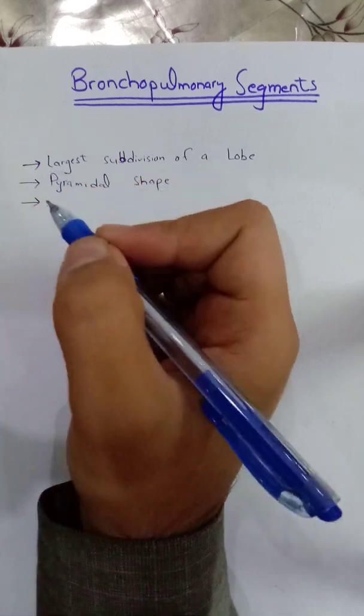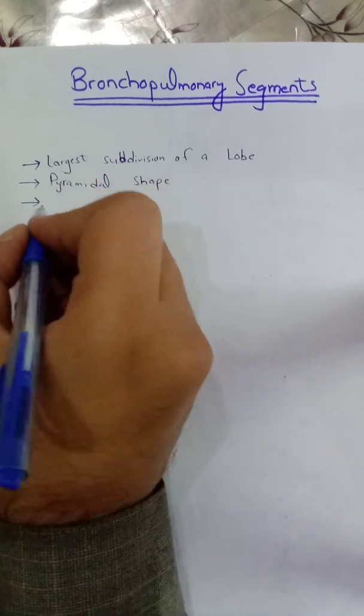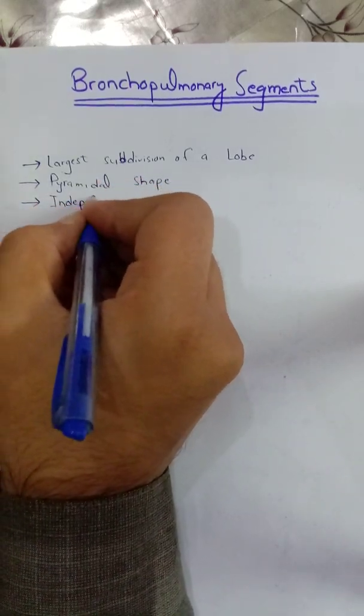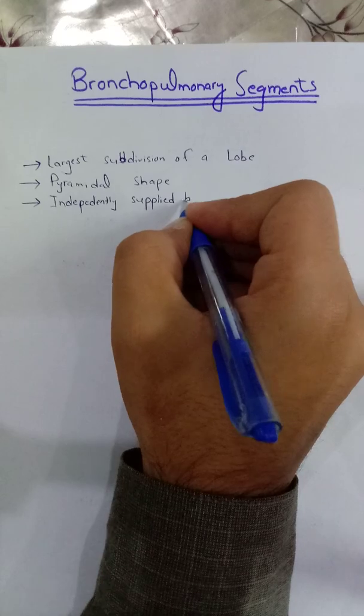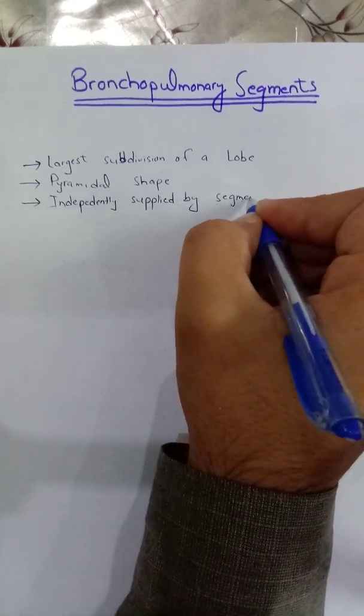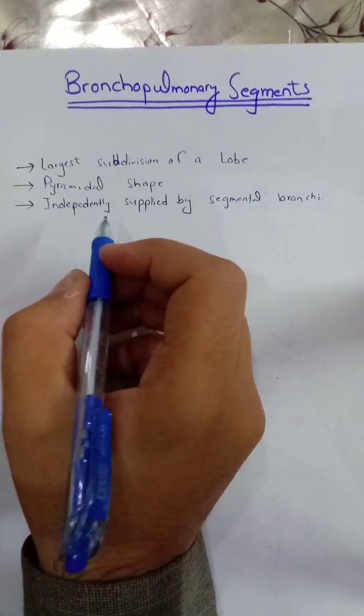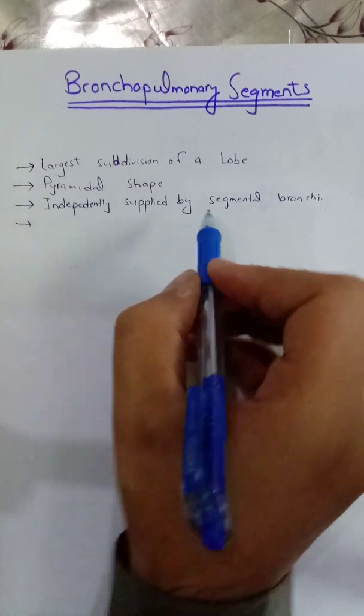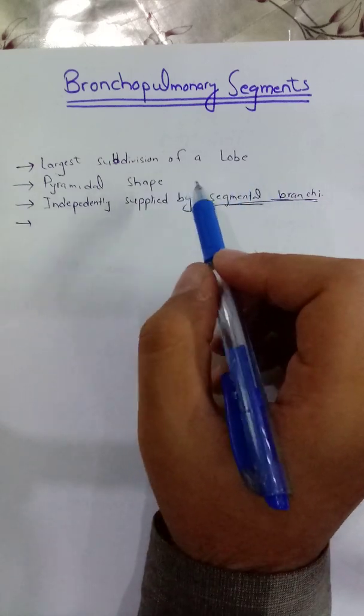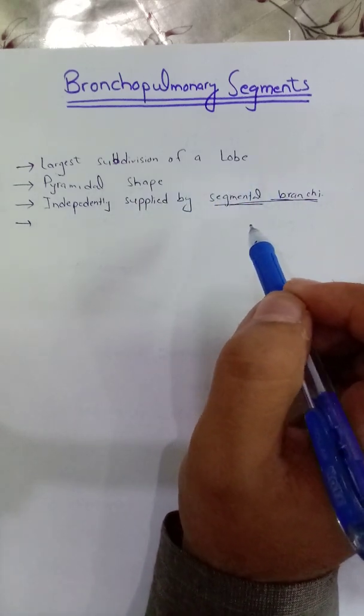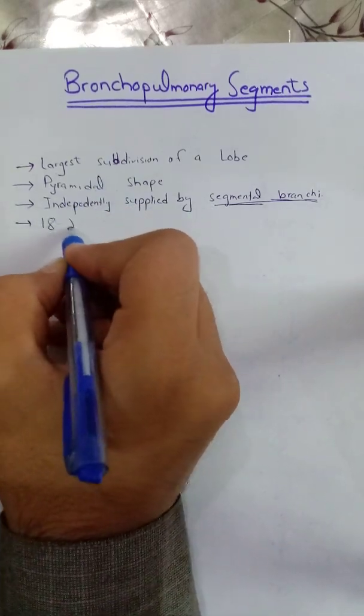They are supplied independently by the segmental bronchi, the tertiary bronchi, and the tertiary pulmonary artery. They are also named according to their segmental bronchi. Like if the apical segmental bronchi is supplying that lobule, then it will be the apical lobule. They are about 18 to 20 in number.